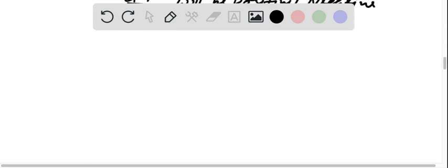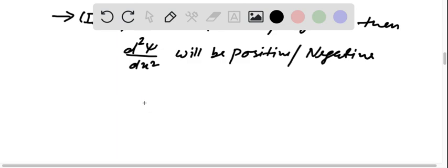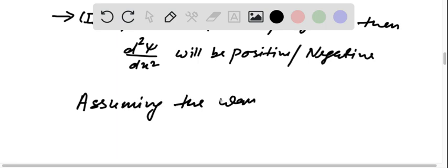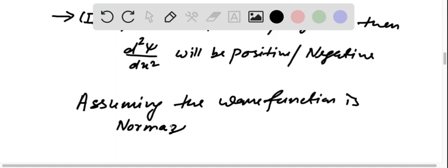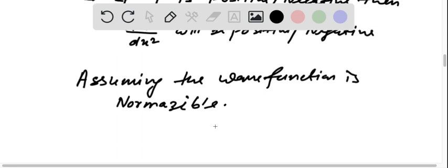Let's find out the normalization condition. Assuming the wave function is normalizable, let's check whether the wave function can actually be normalized. We have the normalization condition.